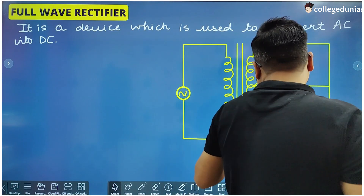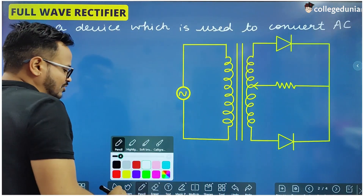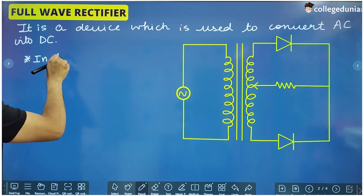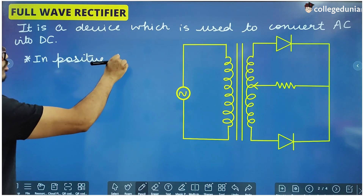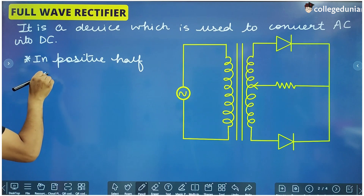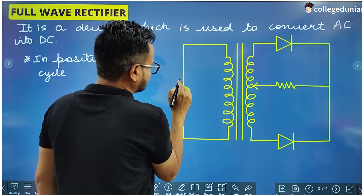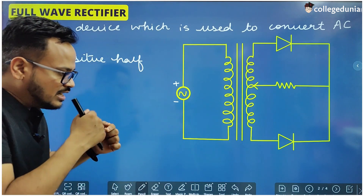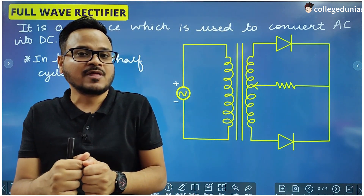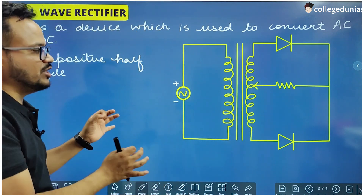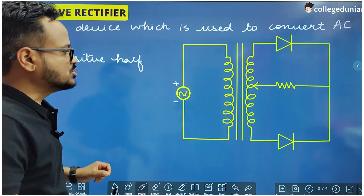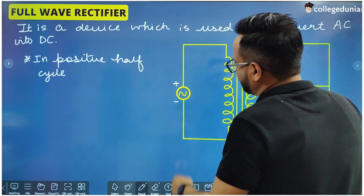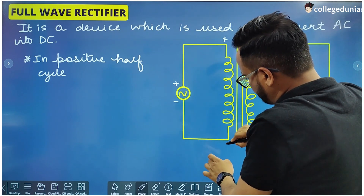So how does it work? It works in two cycles. Let us discuss first about the positive half cycle, then the negative half cycle. In the positive half cycle, suppose this terminal is positive and this terminal is negative. This is how AC works — one terminal is positive and the other is negative, and this alternates almost 50 times per second, which is the frequency of AC in India.